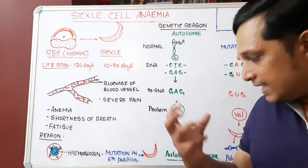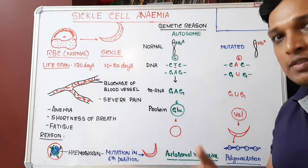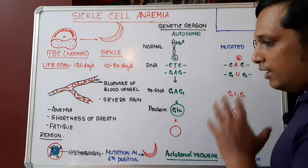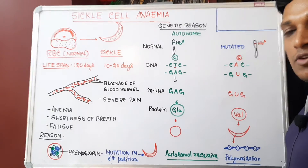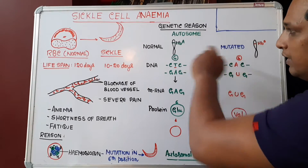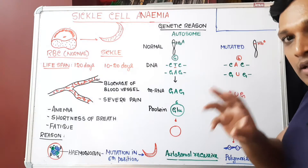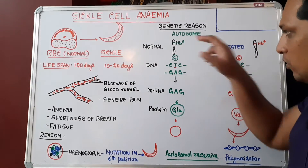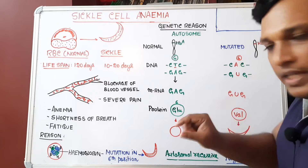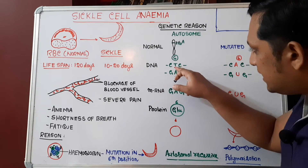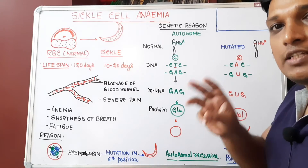That genetic change converts the normal RBC to a sickle-shaped RBC. In our body there are autosomes and allosomes. Autosomes are body chromosomes — they decide body characters, not the sex of an individual. On one of the autosomes, the normal gene called HBA is present. This HBA gene is a segment of DNA containing CTC at the sixth position, which is a codon — a set of three nitrogenous bases.